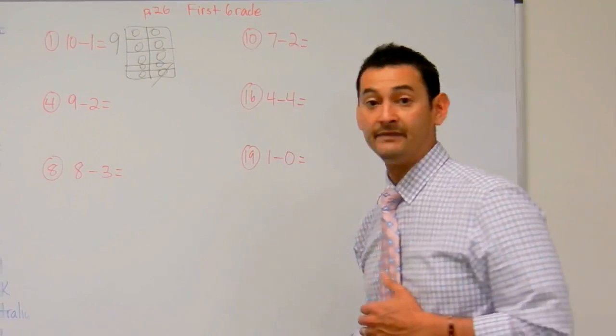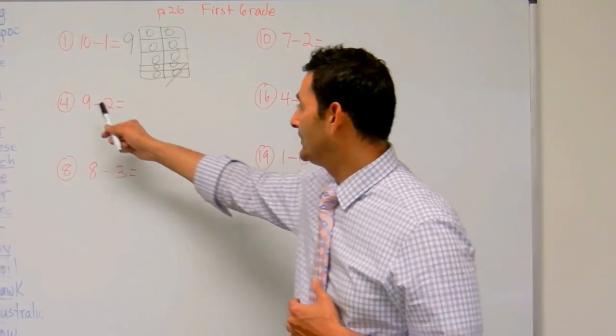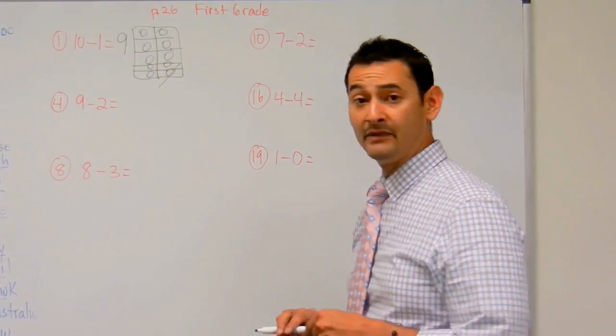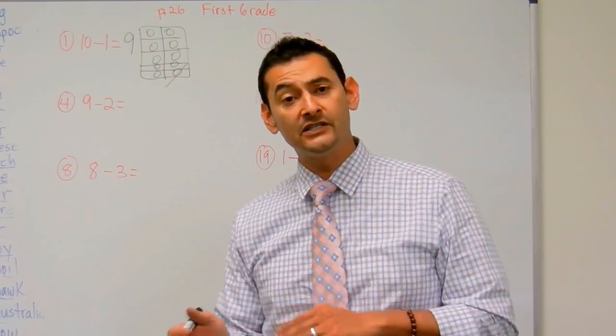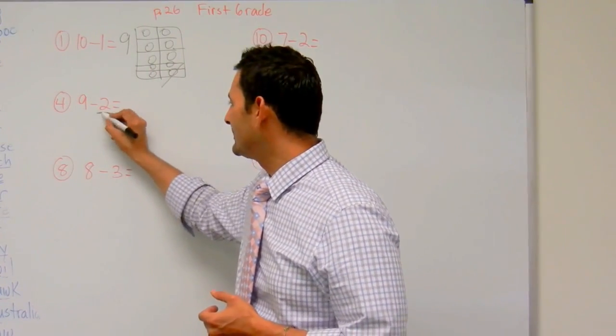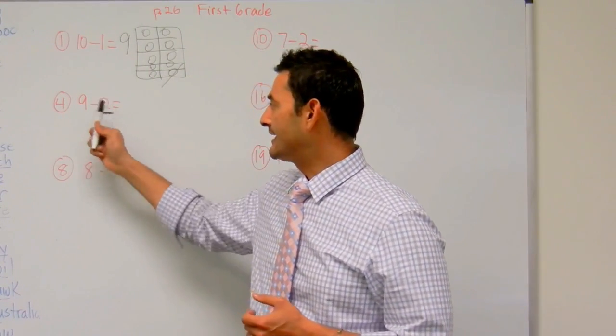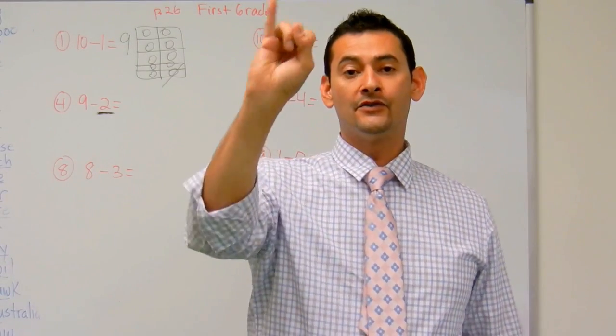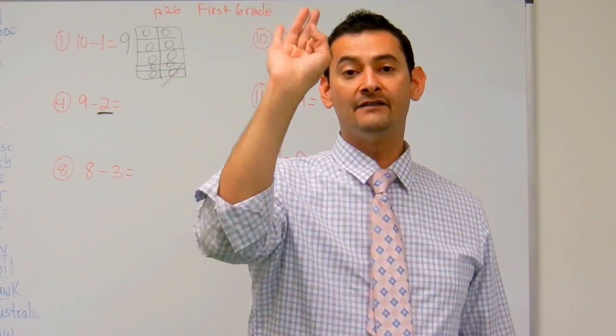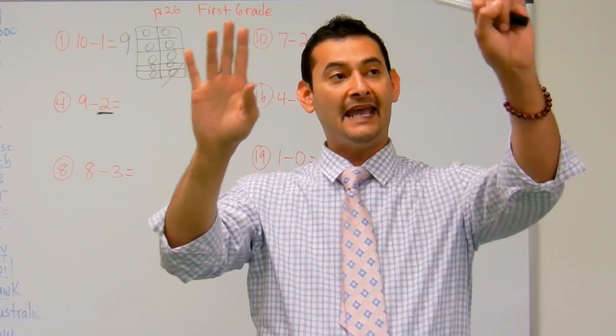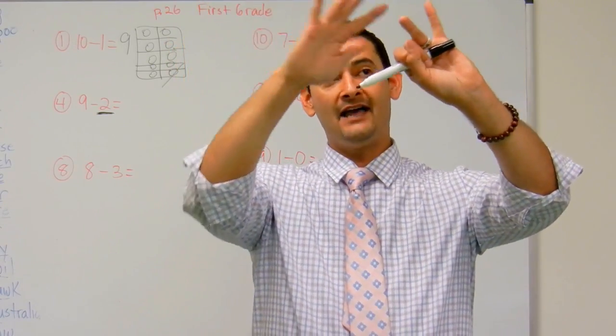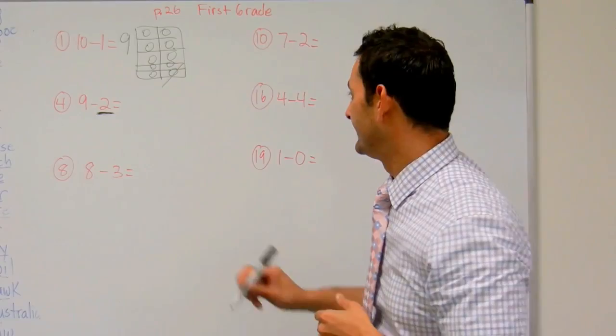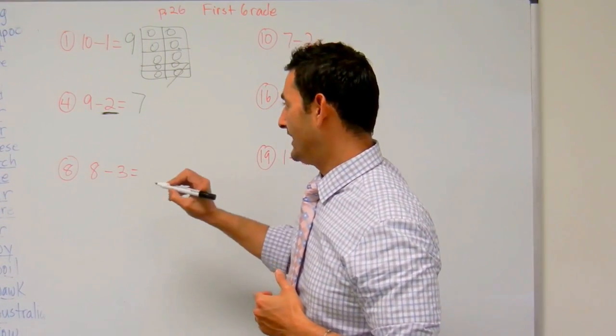Now let's go ahead and do 9 take away 2. What I'm going to do is relate addition to subtraction. So I'm going to start with this number 2 here, and I'm going to count up to 9. Let's start with 2. 2, 3, 4, 5, 6, 7, 8, 9. How many do I have? 5 and 2 more? 7. 9 minus 2 is 7.